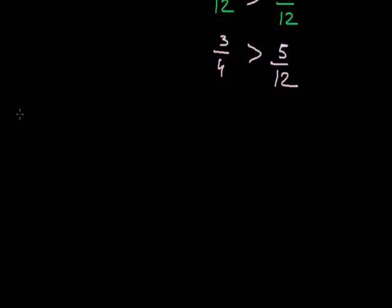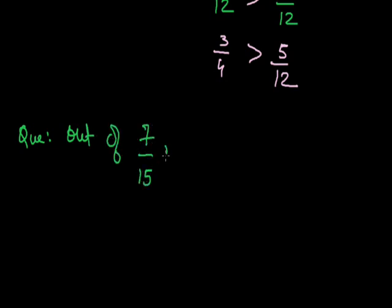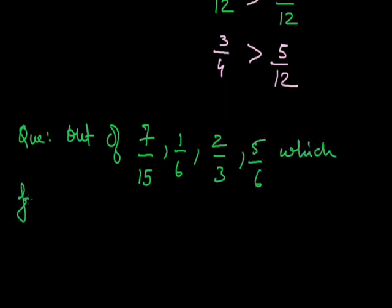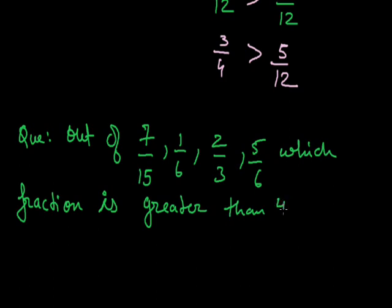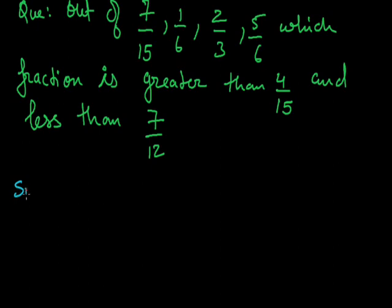Now, let us see a question of arranging the fractions in ascending or descending order. I have to find the fraction which is greater. The question is: out of 7 by 15, 1 by 6, 2 by 3, 5 by 6, which fraction is greater than 4 by 15 and less than 7 by 12? Here, I have to compare or find a rational number which is greater than 4 by 15 and less than 7 by 12.